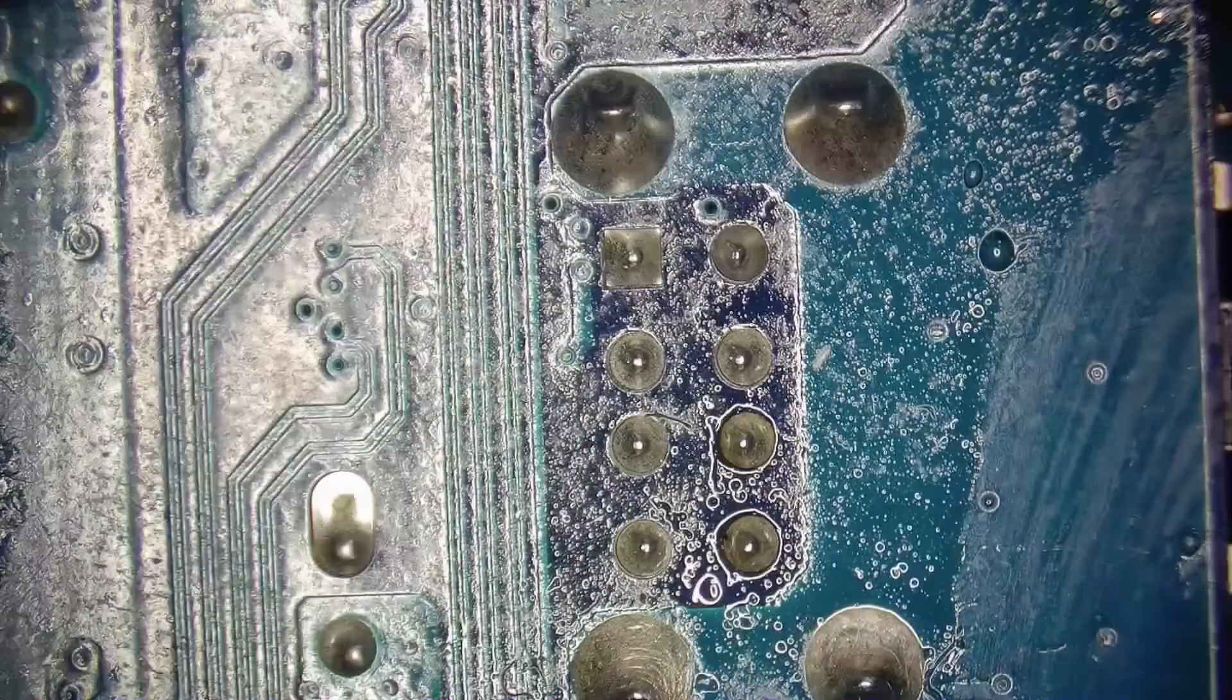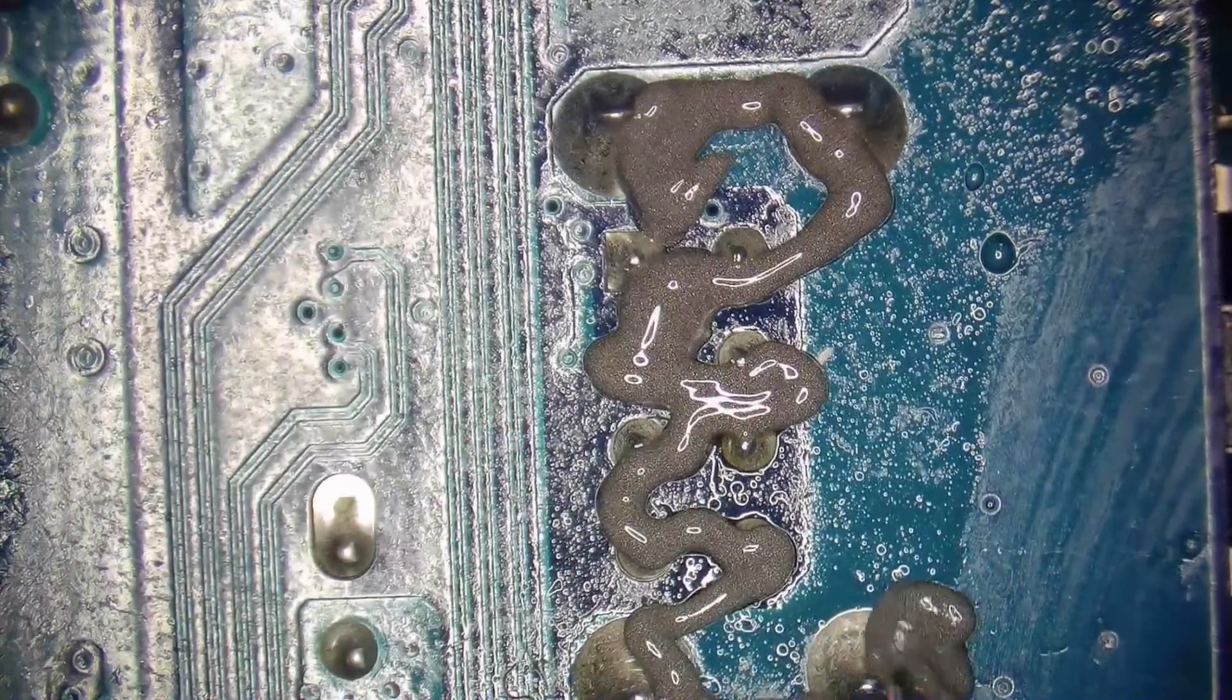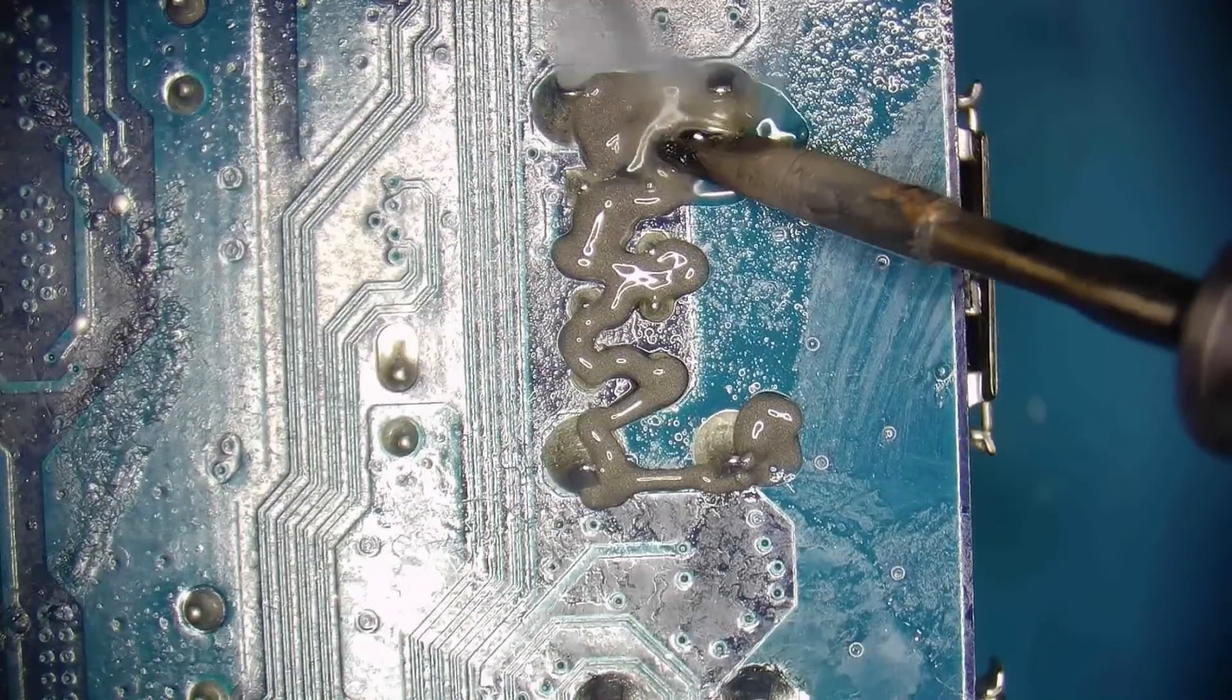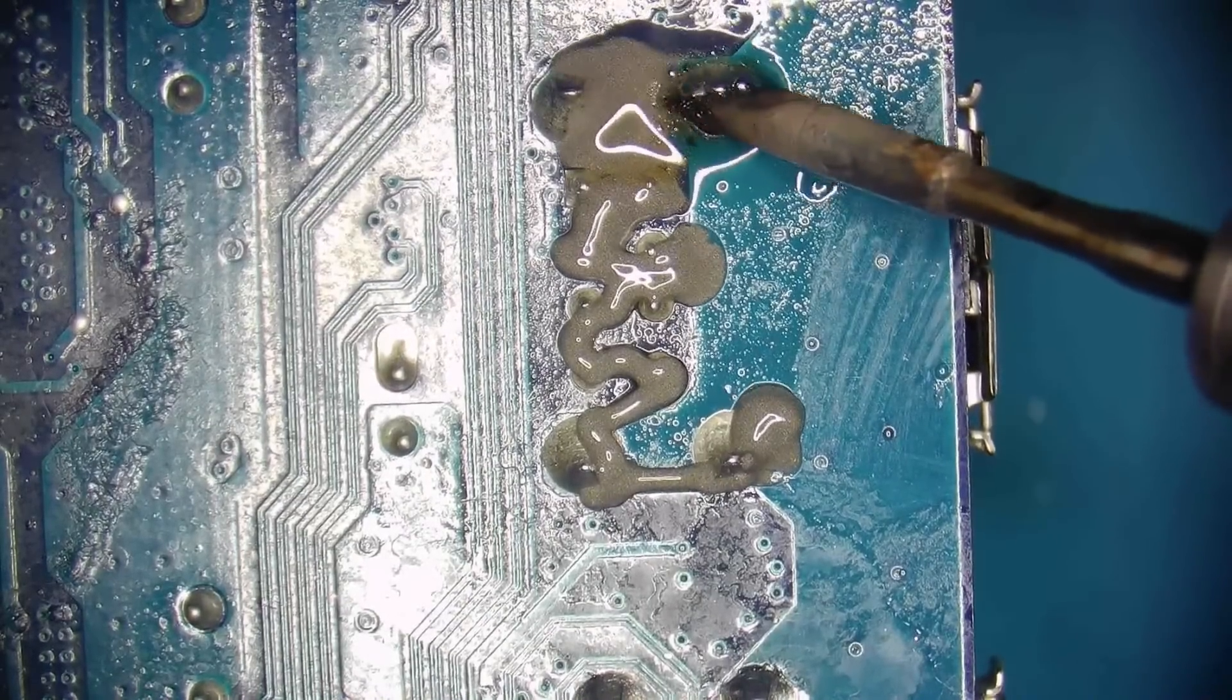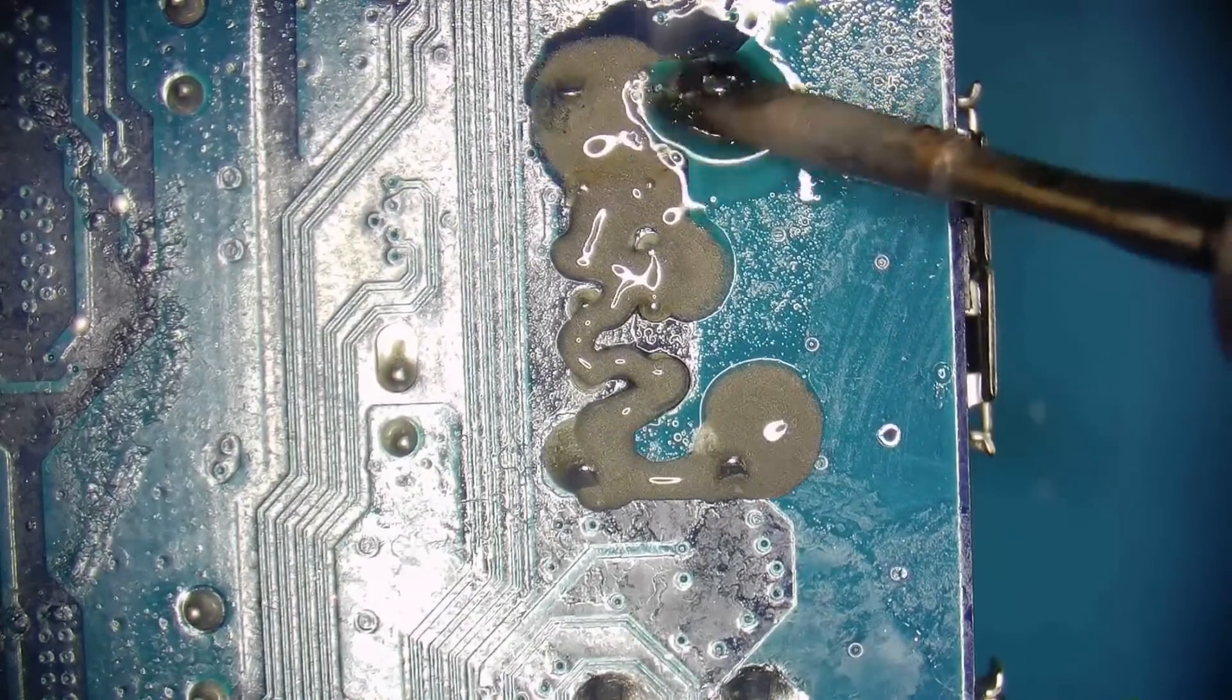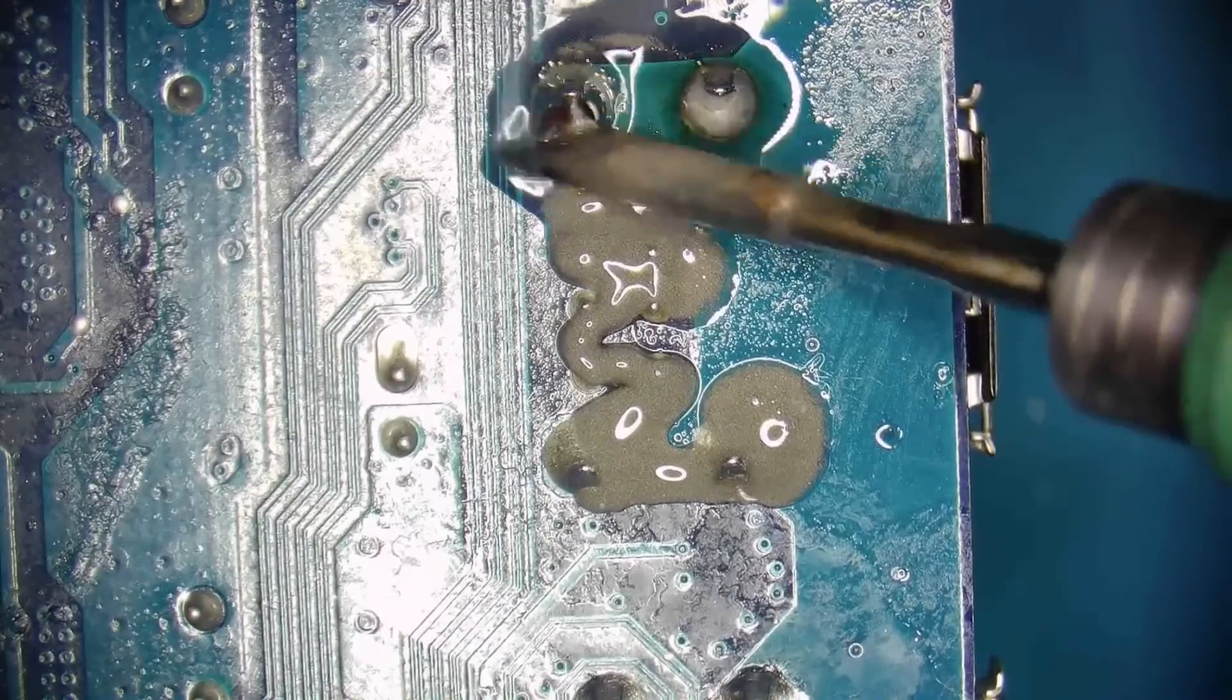Now the first step to desoldering the USB connector is to apply low melt to all of its joints so we can lower their melting point and therefore we will need to apply significantly less heat with the hot air station to remove the connector from the board.